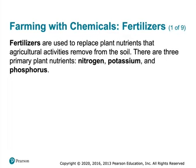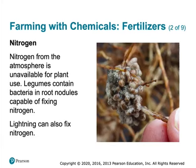Just like humans have macronutrients — carbs, fats, and proteins — the macronutrients for plants, besides carbon dioxide and water, are nitrogen, potassium, and phosphorus. Plants need those in pretty large amounts.